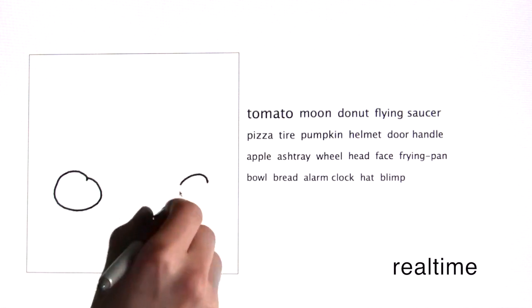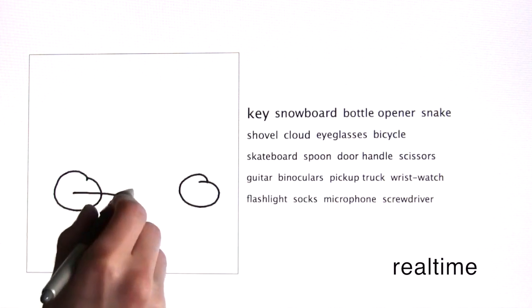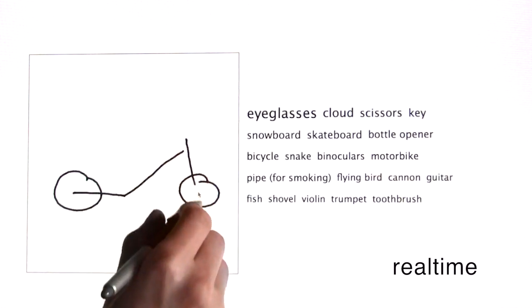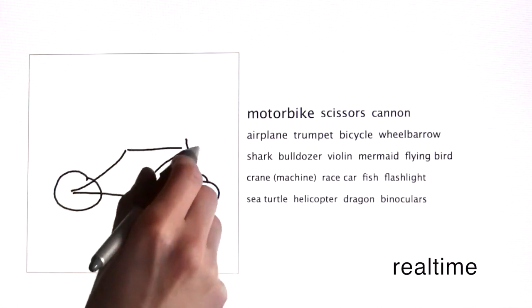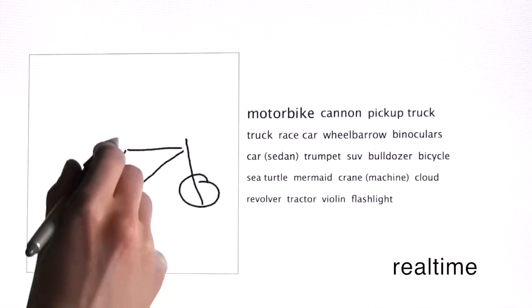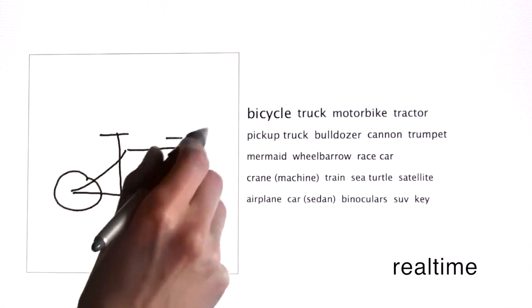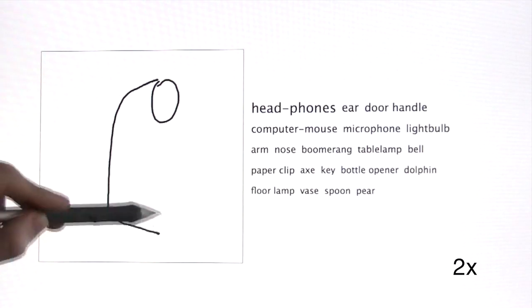In this video, we demonstrate our interactive sketch recognition engine. Users sketch an object using a touch screen device or a mouse. Our engine then reliably recognizes the correct category in real time as users add additional strokes.